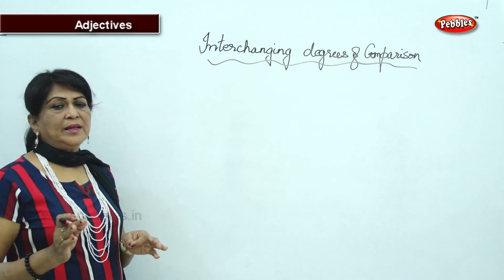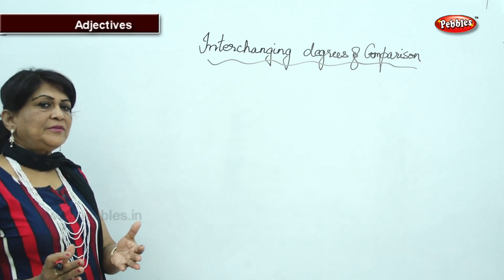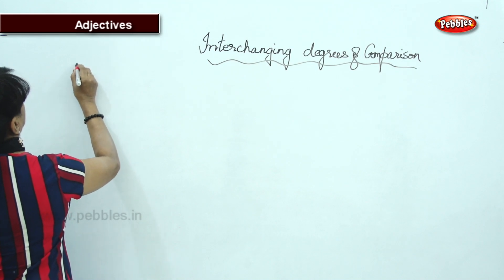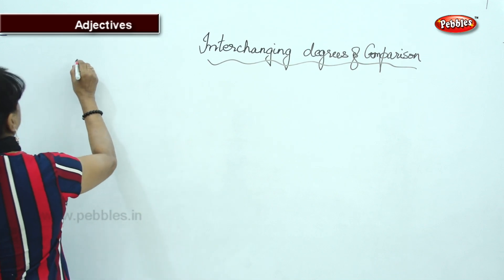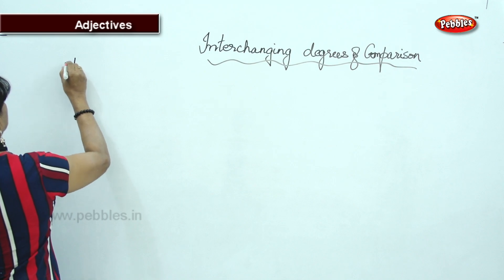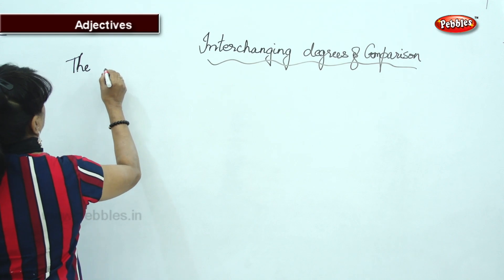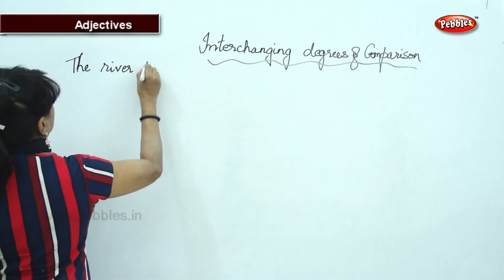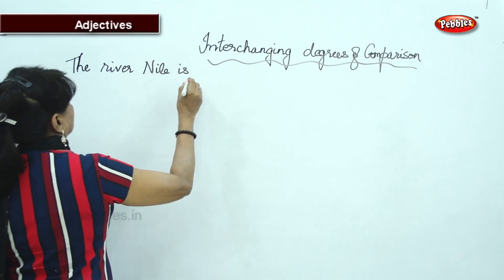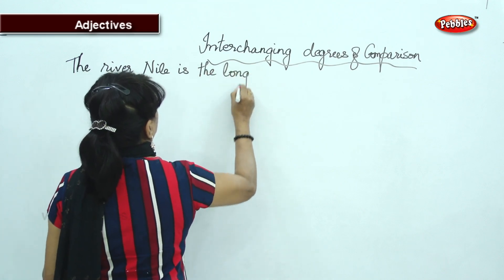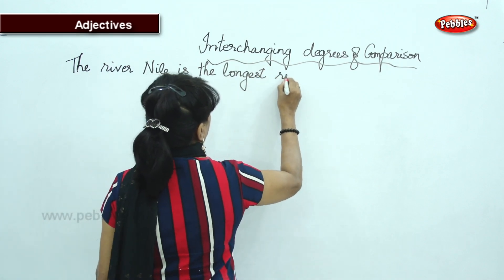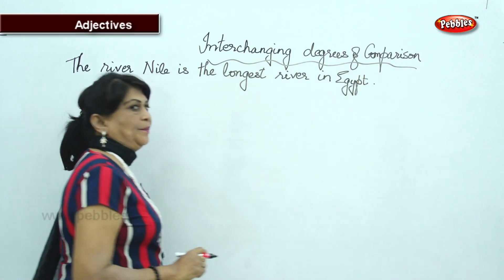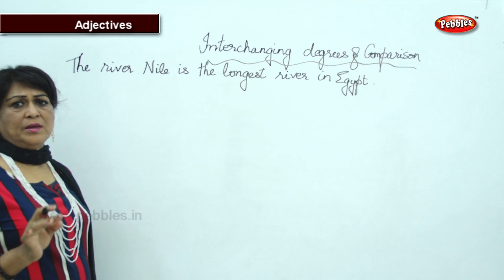I am going to give you one sentence in positive degree and then tell you how to change it to comparative degree and superlative degree without changing the meaning. We will go superlative first. 'The river Nile is the longest river in Egypt.'